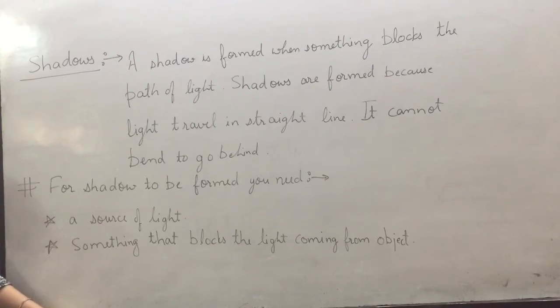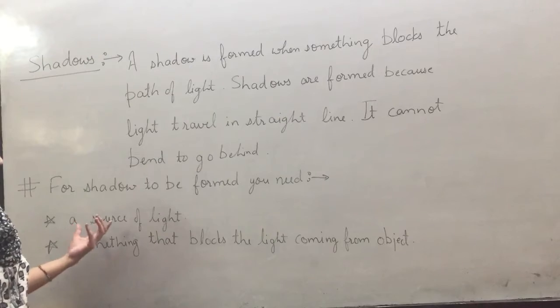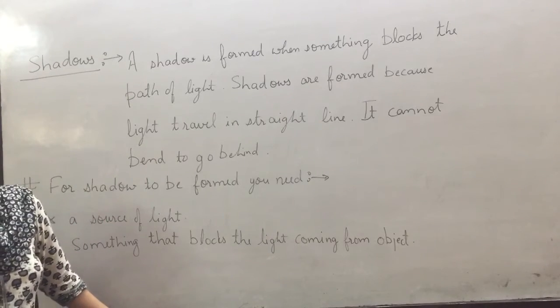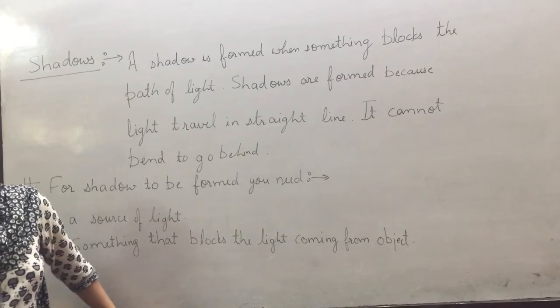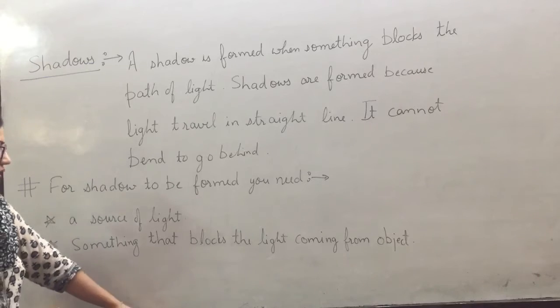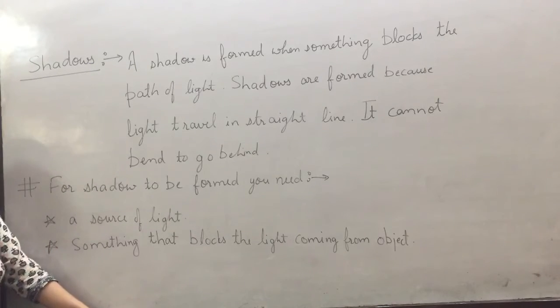For a shadow to be formed, you need a source of light. For example, a torch is a source of light. The sun is a source of light.